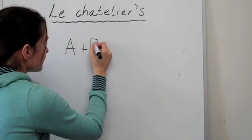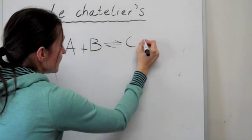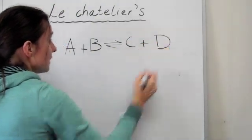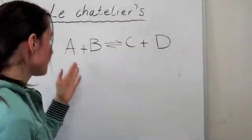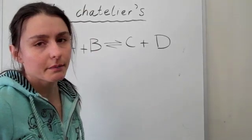So if we have A plus B gives us C plus D, that system, let's just say that it's at equilibrium at the very moment right now. This system is at equilibrium.